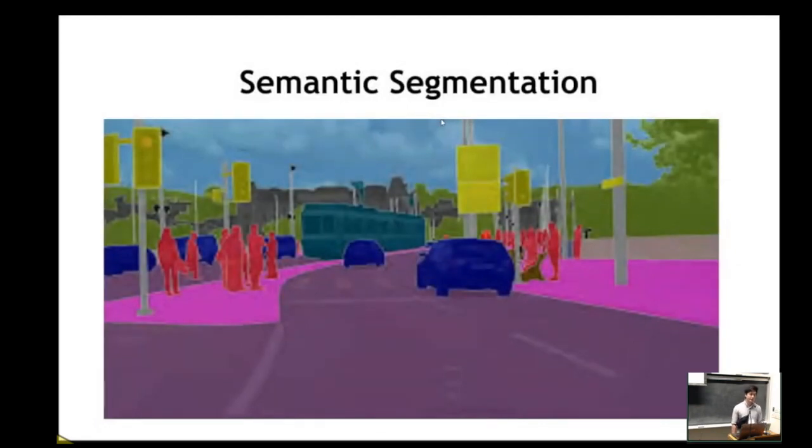But for those who are unfamiliar, the problem we work on is semantic segmentation. Semantic segmentation is essentially pixel-wise classification that is done on the image. This is a very challenging problem with a wide array of applications in robotics, commerce, autonomous driving, and more.